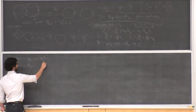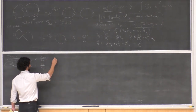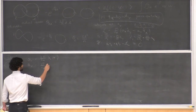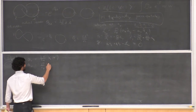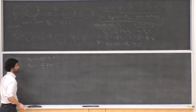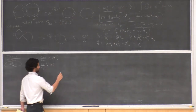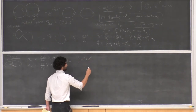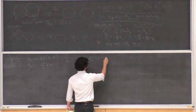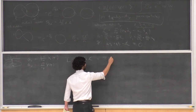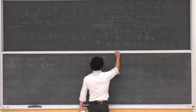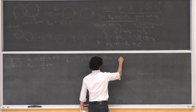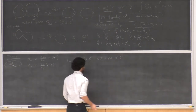Integrating the Lagrangian density over space and plugging in this decomposition, we find the Lagrangian is 2πM × X × Ẏ. Under large gauge transformations — taking f(x,y) = 2πx/L_x or f = 2πy/L_y — capital X goes to X+1 and capital Y goes to Y+1. So X and Y themselves live on a torus; they are periodic.